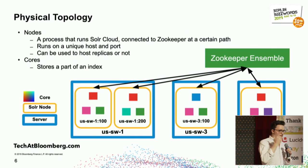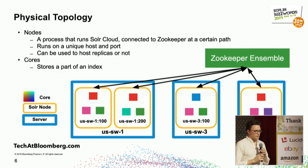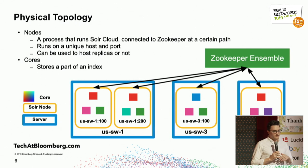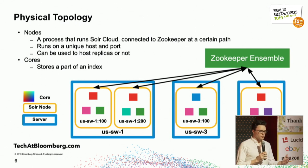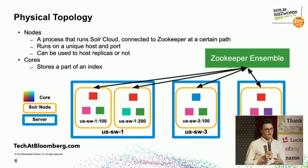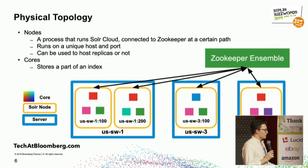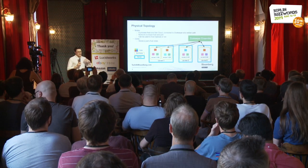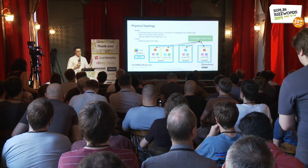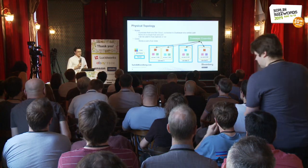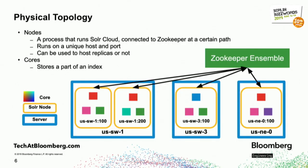First I'll dive into what the physical topology is. Basically this is your infrastructure: your list of servers or virtual machines running Java processes that are running Solr cloud. These Solr clouds are connected to Zookeeper and they are storing Solr cores, which are just parts of the Solr index that you're using to search.